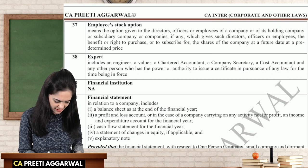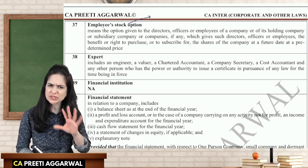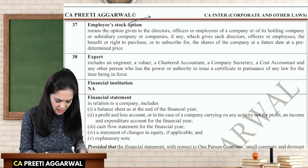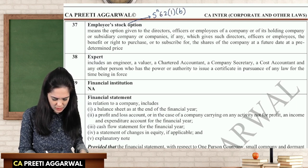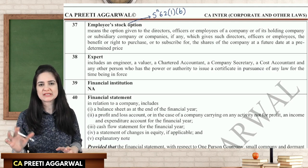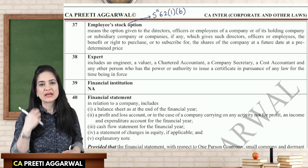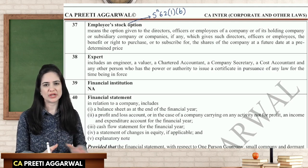Clause 37 defines employee stock option. The provisions are actually contained under section 62, subsection 1, clause B. We will be discussing this later in the chapter on share and share capital.